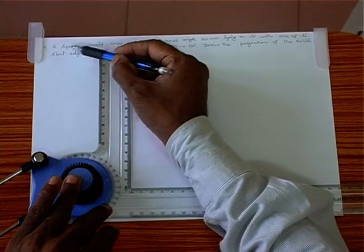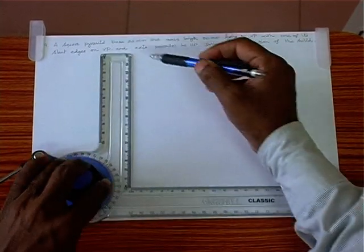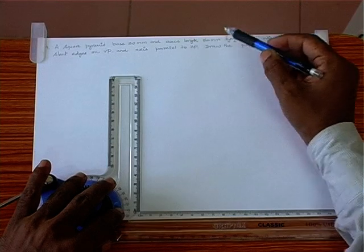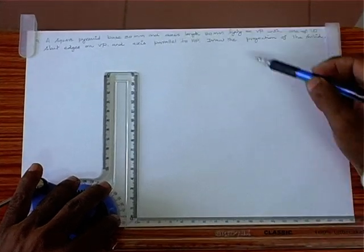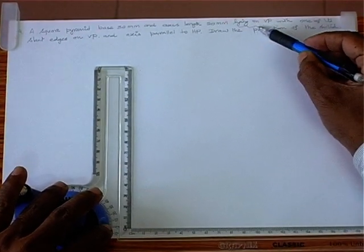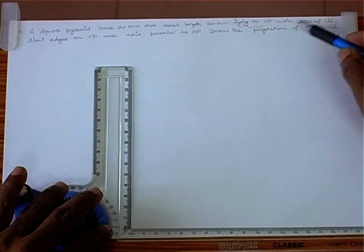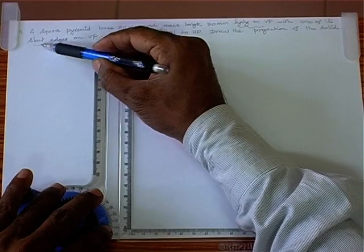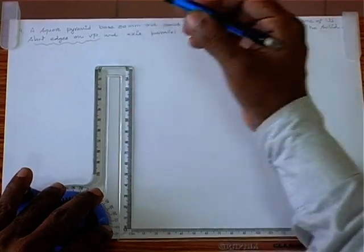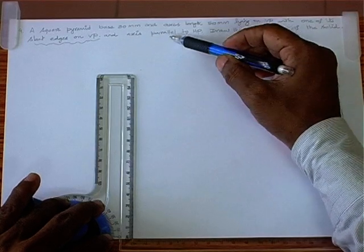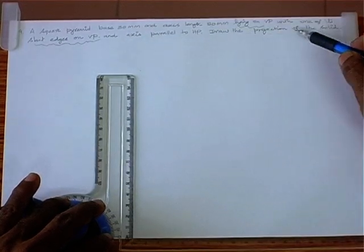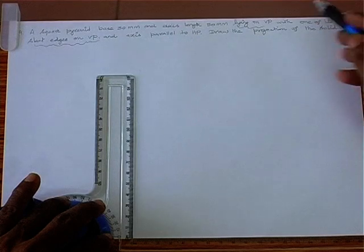Number 9: a square pyramid with base 30mm and axis length 50mm, lying on VP with one of its slant edges on VP and axis parallel to the HP. Draw the projections of the solid.